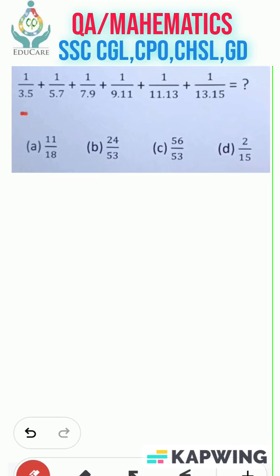Simplification question in which we have 1 by 3 into 5, 1 by 5 into 7, similarly 1 by 7 into 9, till 1 by 13 into 15. We need to solve this using a formula.